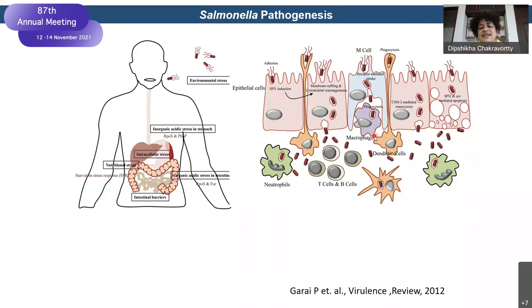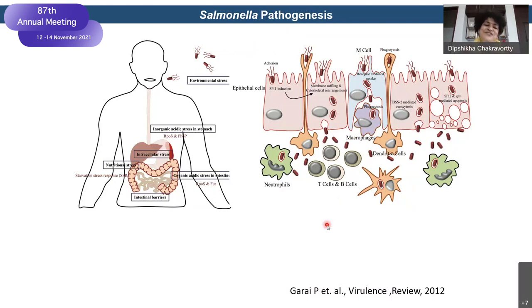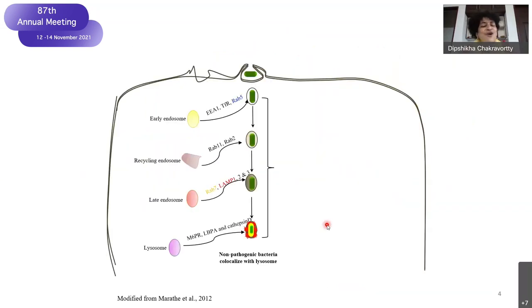During the transcytosis, cells like macrophages and dendritic cells take up the pathogen. For a simple bacteria like E. coli, this would have been a dead end because the body's defense system is good enough to take care of it — but not for Salmonella. And it is all because of its life in a vacuole.